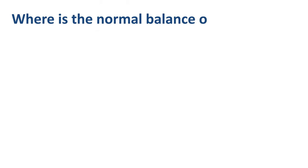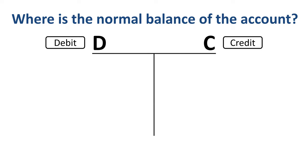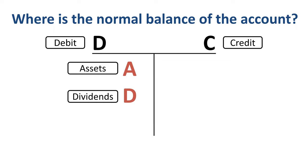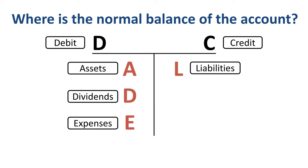The starting point is: where is the normal balance of an account? DC ADE LER tells you debits on the left, credits on the right. ADE is on the debit side, on the left — assets, dividends, expenses. LER is on the credit side, on the right — liabilities, equity, revenue.